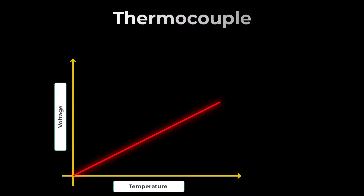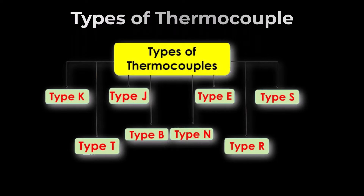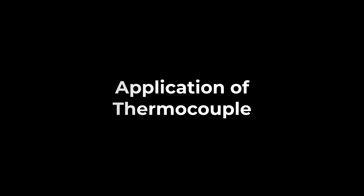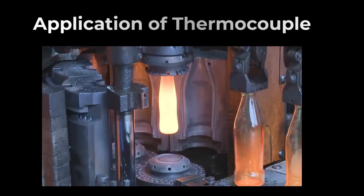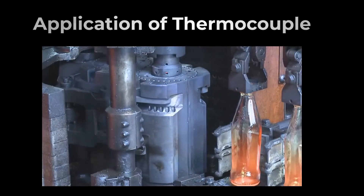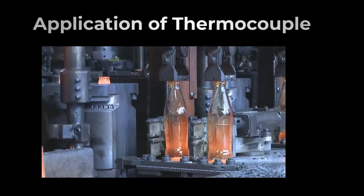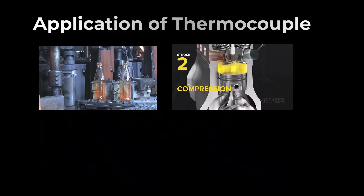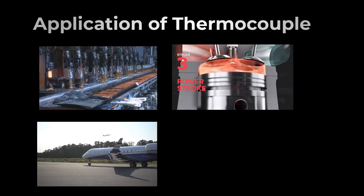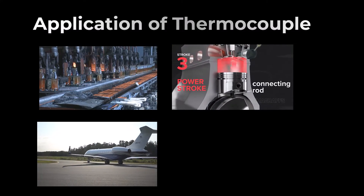The generated voltage, also known as the Seebeck voltage, is measured across the open ends of the thermocouple. By calibrating the relationship between voltage and temperature, the thermocouple provides an accurate temperature reading. Common types include Type J, Type K, and Type T, using combinations of metals like iron, constantan, nickel, and copper. Applications include industrial process monitoring, automotive exhaust gas measurement, aerospace temperature measurement, and HVAC systems.